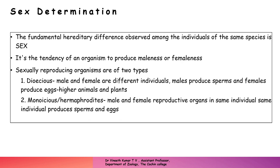Sexually reproducing organisms are classified mainly into two types: dioecious organisms and monoecious or hermaphrodites. This classification is mainly based on animals. In dioecious animals, the male and females are different individuals like humans — males produce gametes called sperms and females produce gametes called eggs. Examples of dioecious organisms include animals as well as plants.